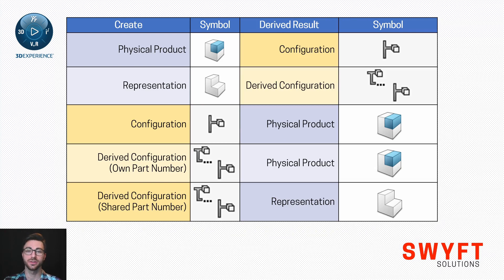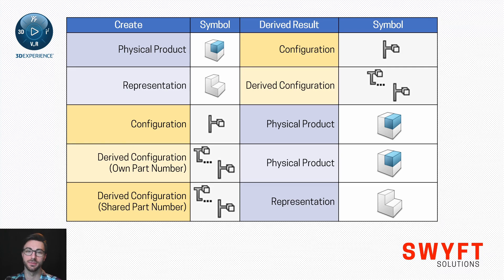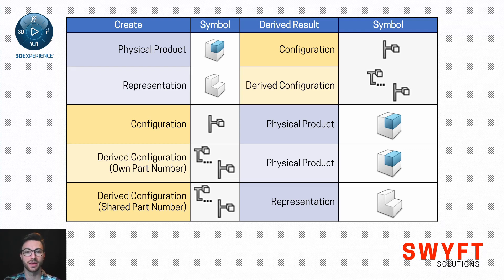When using 3DEXPERIENCE SOLIDWORKS, you can still use the traditional configuration manager, but there is also the option to use the CAD family manager. What this table shows is: if you create something in the CAD family manager, what will appear in the traditional configuration manager, and vice versa. For example, if you create a physical product in the CAD family manager, a configuration will appear in the traditional configuration manager. If you create a representation in the CAD family manager, a derived configuration will appear. Conversely, creating a configuration in the traditional manager yields a physical product. For derived configurations, if you choose to give it its own part number, it appears as a physical product; if it shares a part number with an existing configuration, it appears as a representation.